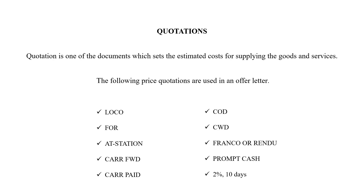We have something called quotations. When an offer is given without any particular price or rule or regulation, we call it an offer. But a quotation is one of the documents which sets the estimated cost for supplying goods and services. If a particular price or rate is tagged and a quote is given, then we consider it a quotation.